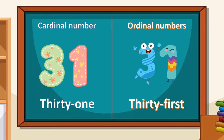All right, so as you can see, after twenty the second digit returns back to its original first digit form, which is first, second, third, fourth, and fifth.